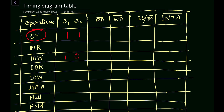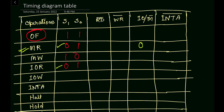When S1 and S0 are one and zero, the microprocessor performs the write operation. For memory read, S1=0 and S0=1. For input/output read, it is also a read operation so S1=0 and S0=1 as well. Since the second case and fourth case have the same status signals, we distinguish them using the IO/M bar signal. For memory read, IO/M bar is zero because M bar is active low. For input/output read, IO/M bar will be high.